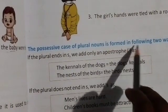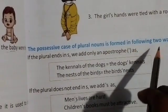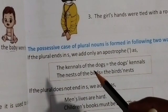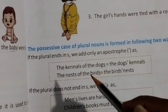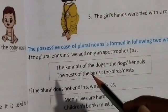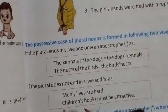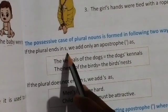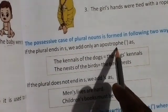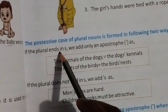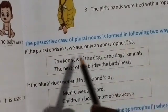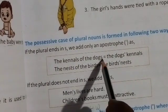The possessive case of plural nouns is formed in two ways. Jab singular noun hoga to apostrophe 's' use karenge. Plural nouns ke liye do ways hain. First: if the plural ends in 's', we add only an apostrophe. Yadi plural ki ending only 's' se ho rahi hai to hum only apostrophe add karenge.